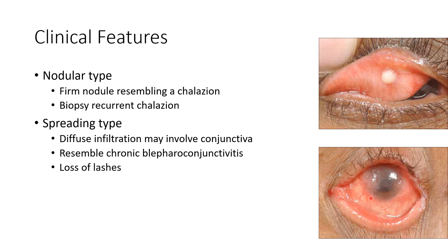In the spreading type, there will be diffuse infiltration which may involve the conjunctiva, as you can see in this picture. It resembles chronic blepharoconjunctivitis. There will also be loss of lashes.